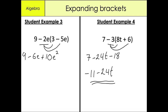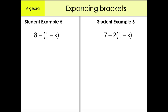Moving on to our last two examples. First: 8 - (1 - k). If there's no number in front of the negative sign, by default the number is 1. So expanding: minus 1 times 1 is minus 1, minus 1 times minus k — negative times negative gives a positive — so plus k. Collecting terms: 8 minus 1 is 7, so our answer is 7 + k.